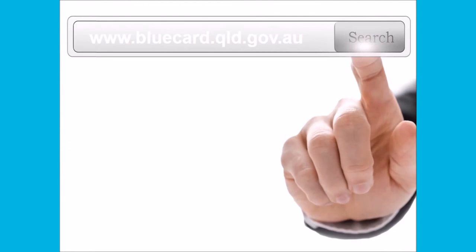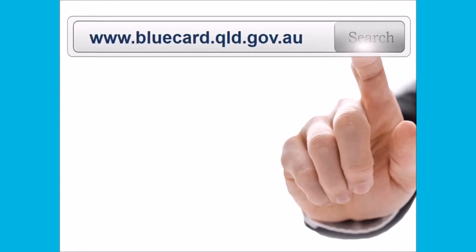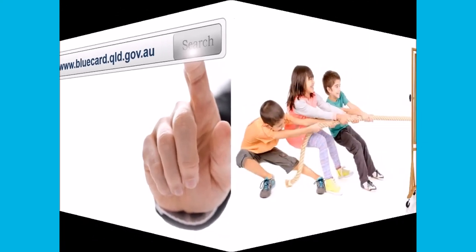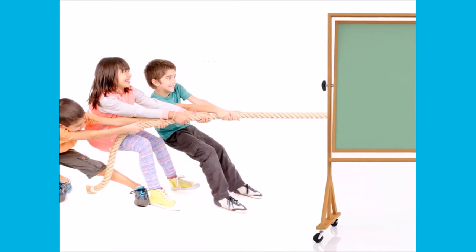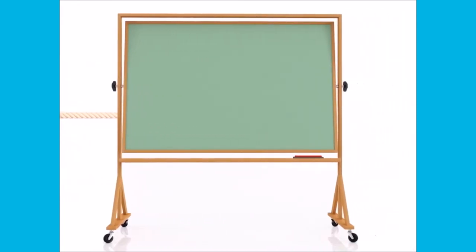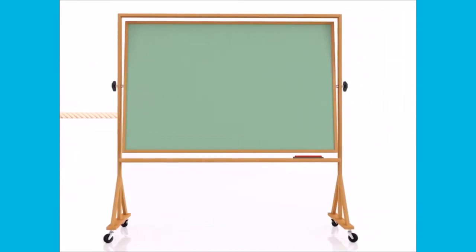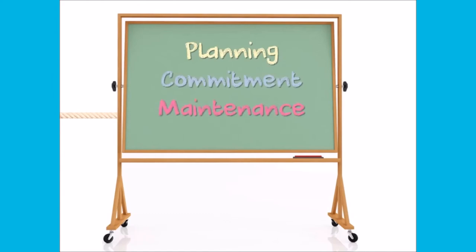To further assist you in developing and implementing effective child and youth risk management strategies, a toolkit available on the risk management page of the blue card services website has been developed to provide information and guidance on the eight minimum requirements. Remember: safe service environments don't just happen — they require ongoing planning, commitment and maintenance.